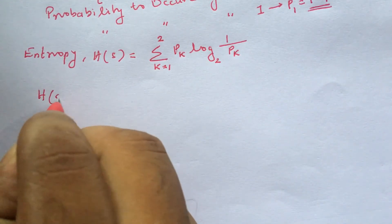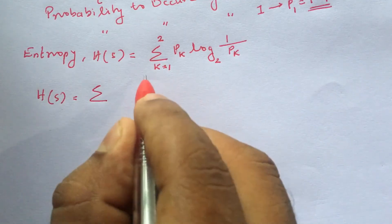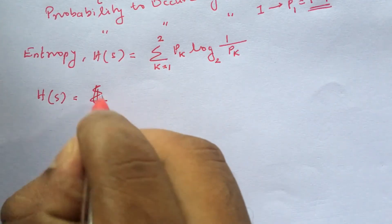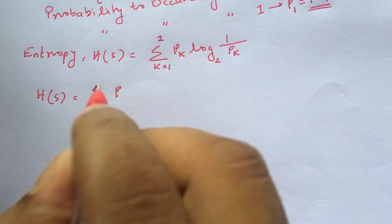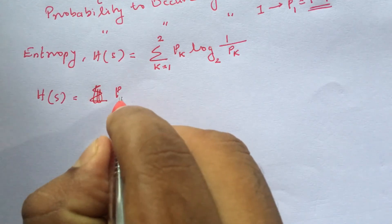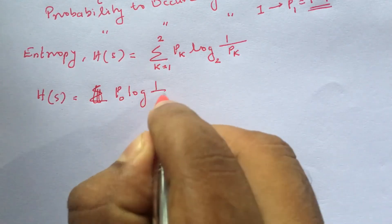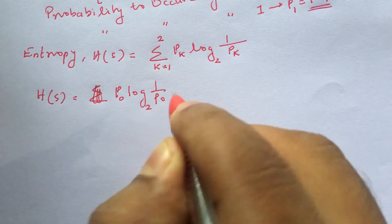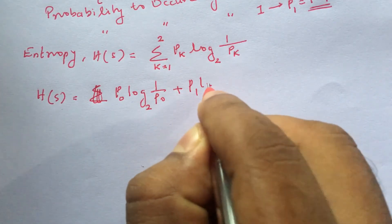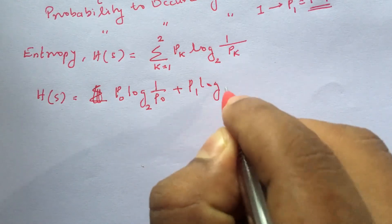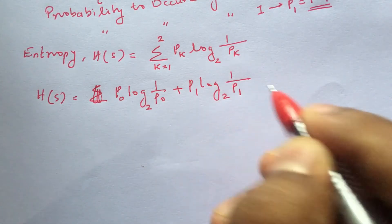H of S is equal to sigma over symbols k equals 1 to 2: p0 times log base 2 of 1 by p0, plus p1 times log base 2 of 1 by p1.